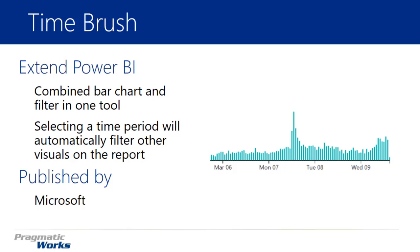It does have to be based off of some kind of a time element, as the name of the visual implies. It's a Time Brush, so you should really be looking at some kind of time data. Basically, as you select the area of the chart that you want to filter, it will filter everywhere else on your data visualizations or your report based on the selection you have in the Time Brush.